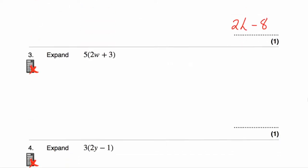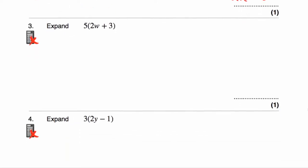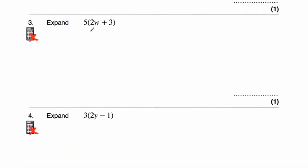Question number three asks us to expand 5(2w + 3). We need to multiply what's inside the brackets by five. Five times 2w would be 10w, because five times two is ten, and then w, so 10w. Then we've got our plus sign, and five times three would be plus fifteen. The answer is 10w + 15.